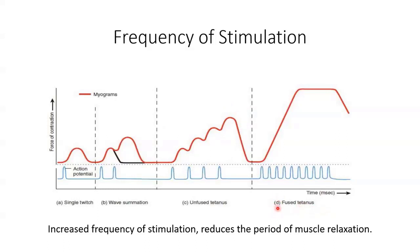We can then have fused tetanus, also called complete tetanus. This is where there is no relaxation of muscle fibres between action potentials, because those action potentials happen very quickly one after another. In this scenario, we reach our maximal level of force production, and that force production remains steady until those action potentials stop. The key point is: when action potentials are close together, their force will summate — the more action potentials and the closer they are, the higher the level of force.